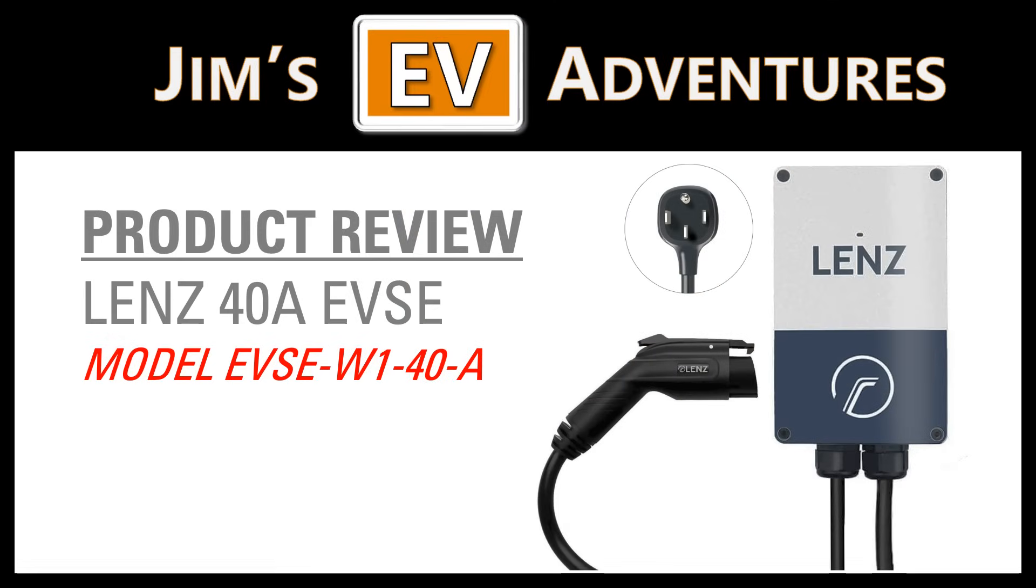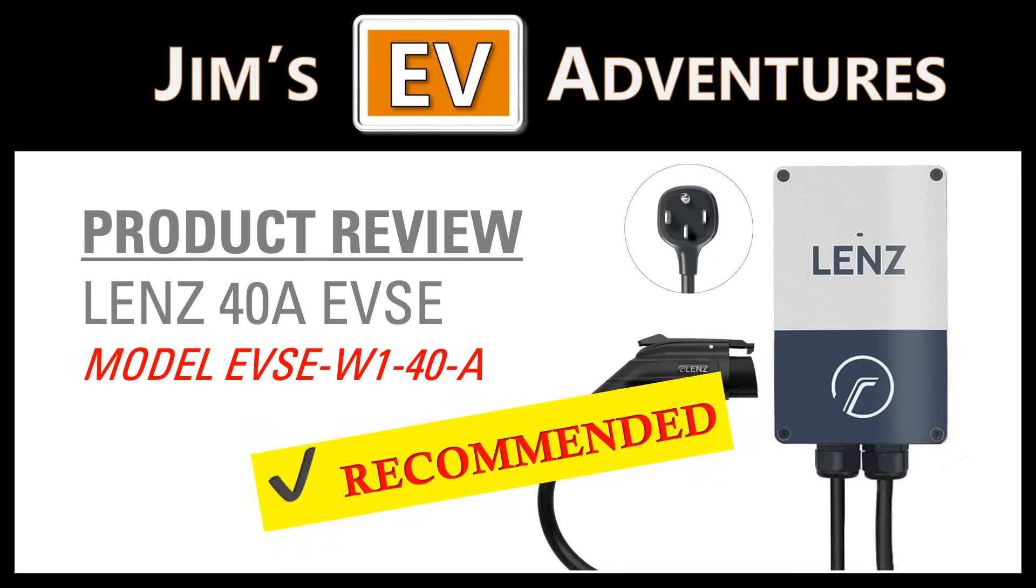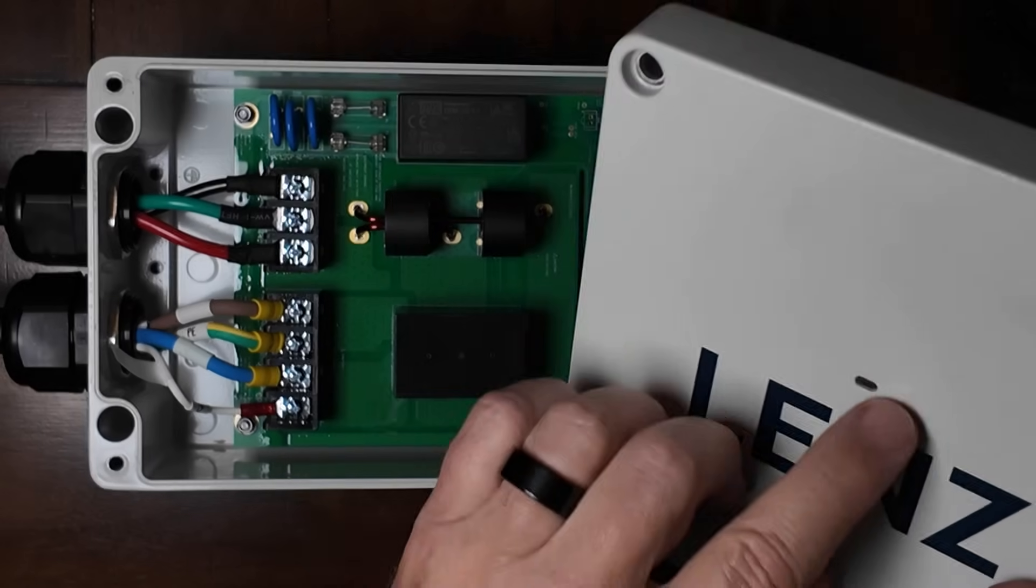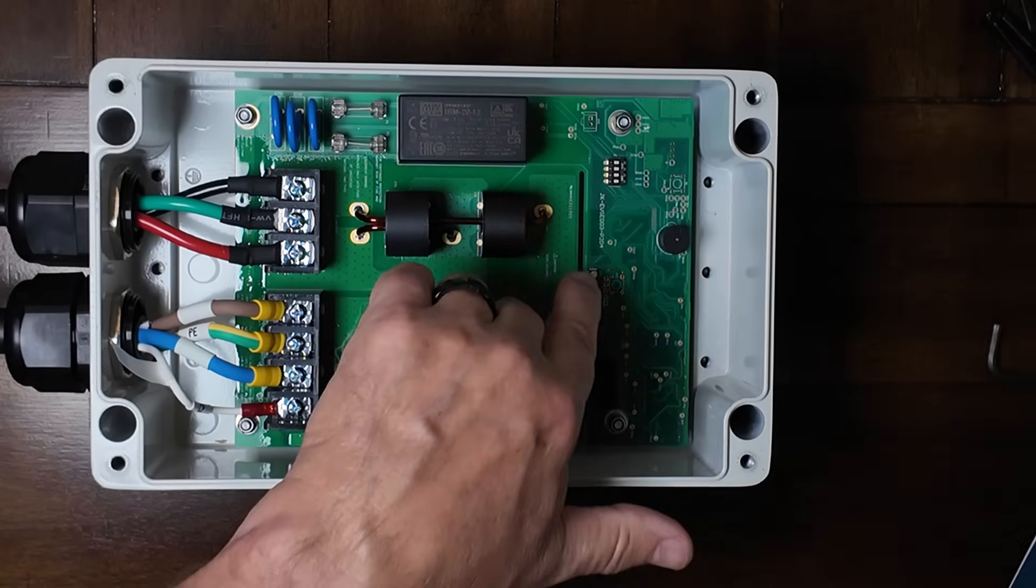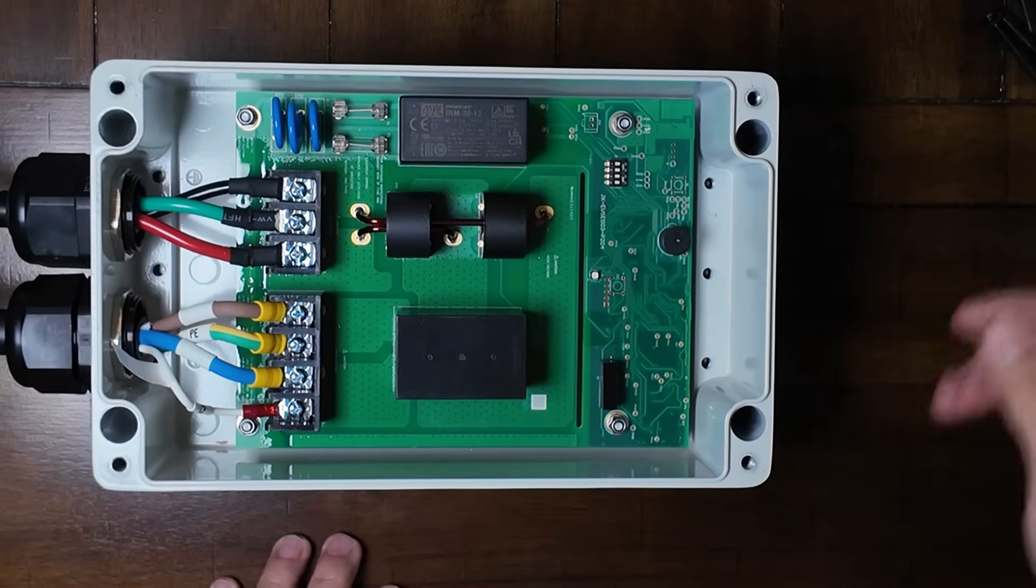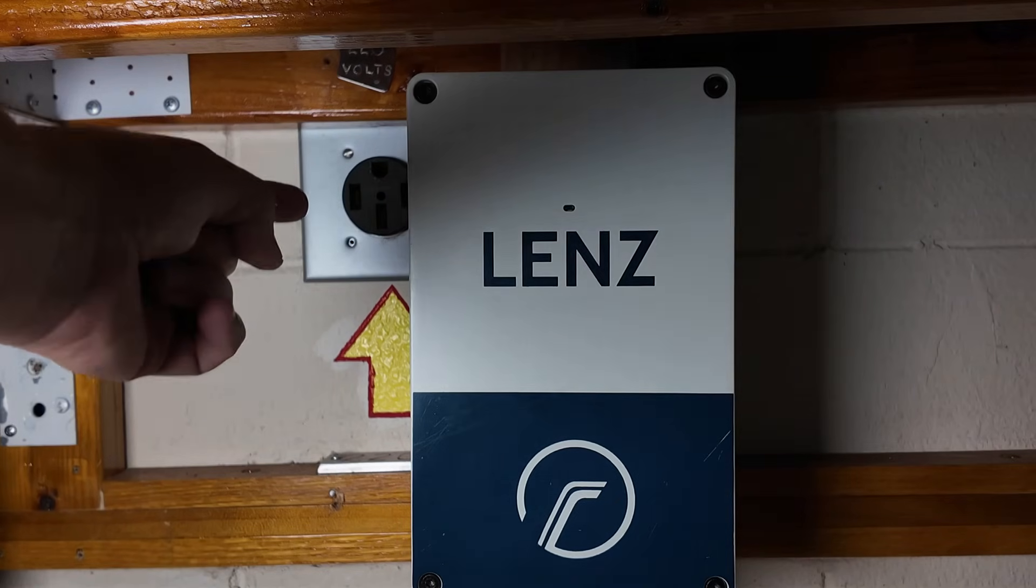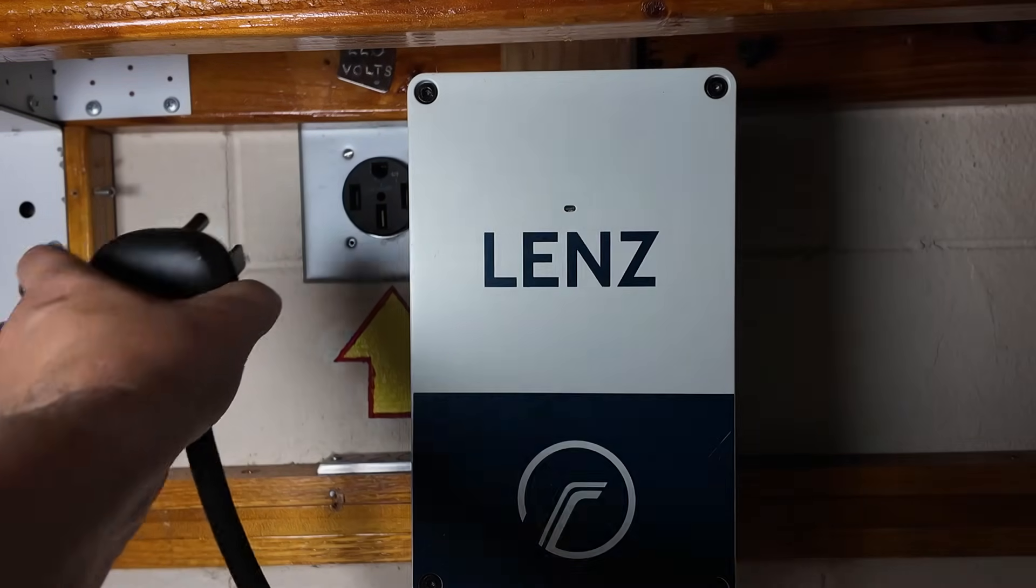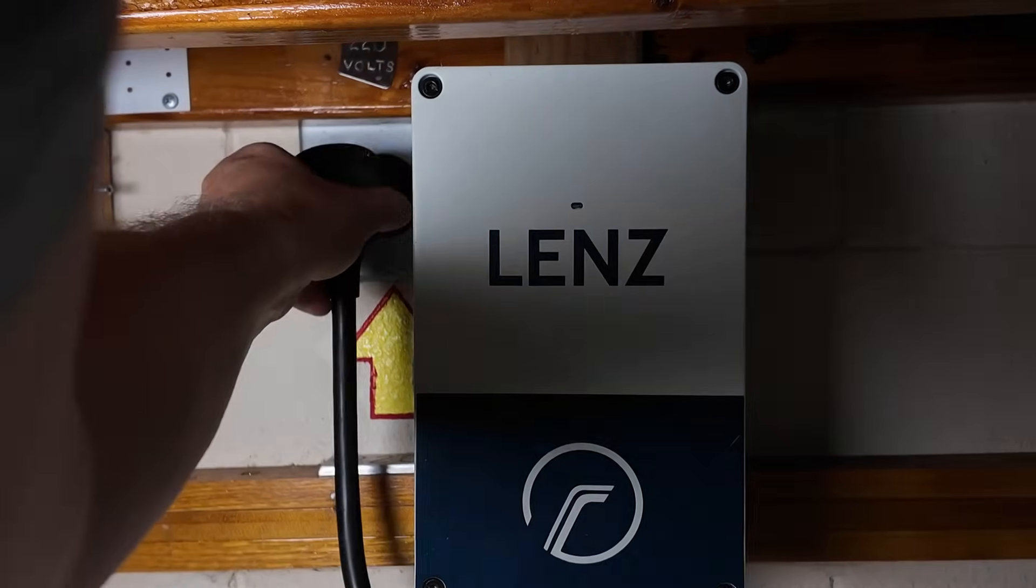So to recap today, we looked at the Lenz EVSE-W1-40-A. We walked through what it is, how it works, and why it's more than just a simple plug-and-play device. I opened it up, I adjusted the amperage down from 40 amps to 32 to better suit my home circuit and car requirements. Then I mounted it on the wall and ran a quick test charge for flawless operation. Now, you may ask, why did I choose the Lenz? Simple. It was the least expensive wall-mounted CTL-certified EVSE I could find on the market. And it doesn't feel cheap. The build quality is solid.